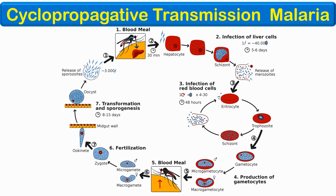Cyclo-propagative transmission is a combination of propagation and developmental processes inside the vector. An example is malaria parasite development and propagation inside the mosquito. The mosquito acquires gametocytes during the blood meal; these gametocytes fuse to produce a zygote that develops into an oocyst in the midgut. This oocyst ruptures to produce around 3,000 sporozoites, which are injected by the mosquito back into humans to cause malaria infection.